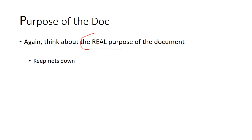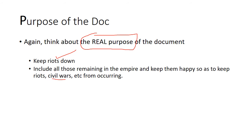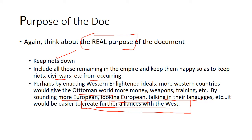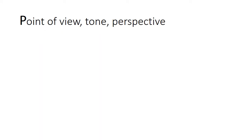For the purpose of the document, it's going to help keep riots down and prevent civil wars from occurring. By passing the Tanzimat reforms and embracing Western Enlightened ideals, the Ottomans may attract more Western business and create further alliances with Western powers — keeping the Russians away and protecting themselves even better.